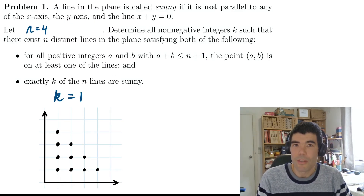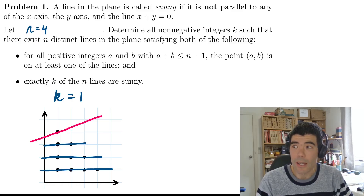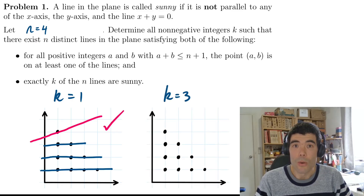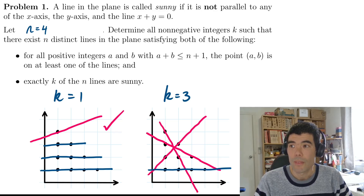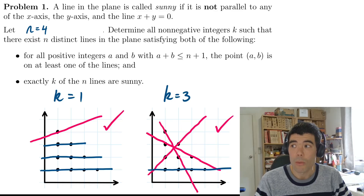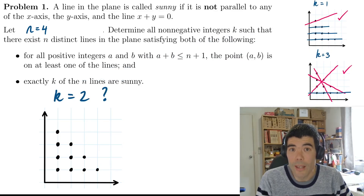For n equals four, k equals one is straightforward — three horizontal lines and one sunny line, and you're done. You can see how for any value of n, k equals one is always possible with a similar construction. k equals three is also possible by using the three sunny lines from the n equals three triangle and adding one horizontal line to cover the last four points. You can keep adding horizontal lines for n equals five, six, seven, and so on. So k equals one and k equals three are solutions for all n.